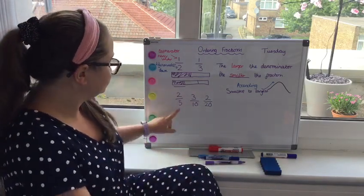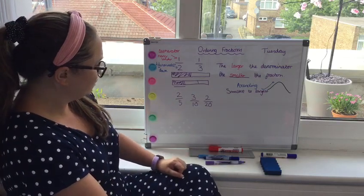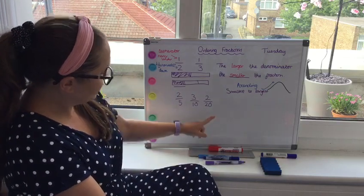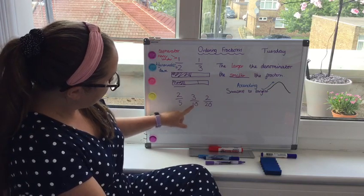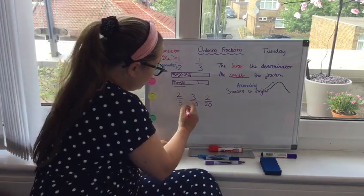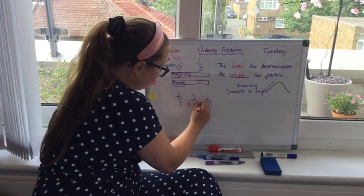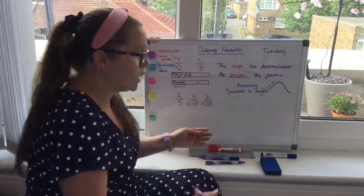So I'm going to think, well, five, ten and twenty. Well, actually, I could leave this fraction as it is and turn all of these into twentieths. So what I'm going to do is I'm going to turn them into twentieths so that I can compare them. So that they're the same physical size pieces to be able to compare them.